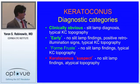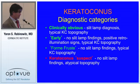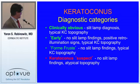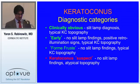I divide keratoconus into four diagnostic categories: clinically obvious; early keratoconus with no slit lamp findings but retroillumination signs; formed first keratoconus with no slit lamp findings but typical keratoconus topography; and keratoconus suspect with no slit lamp findings but atypical topography.